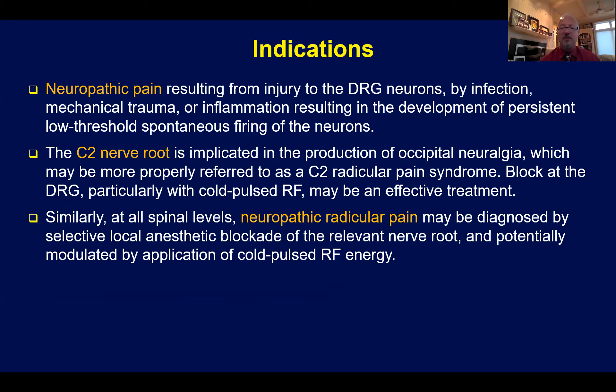What are the indications for injection of the dorsal root ganglion in the cervical spine? Neuropathic pain, primarily as a result of injury to the DRG by either trauma, infection, or inflammation, can result in the development of a persistent low-threshold spontaneous firing of the neurons. Each DRG may have as many as almost 15,000 soma inside the DRG, so it's an extremely potent and compact relay station for sensory information.